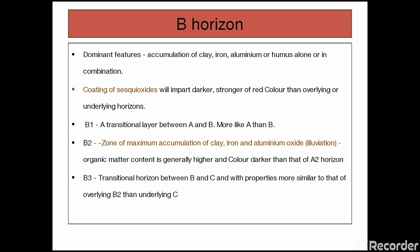Illuviation is a process of accumulation of clay, iron and aluminum oxide. The layer which involves more in case of illuviation is B2. In case of B1 it is a transition layer and again B3 forms a transition layer.